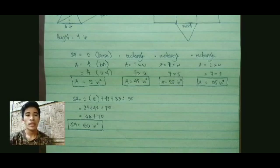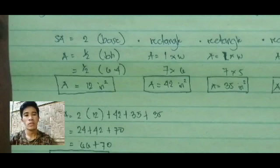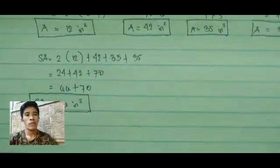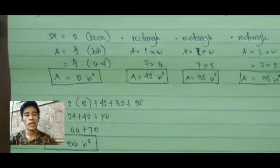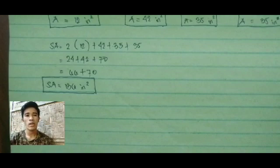Now substituting back into the formula: SA equals 2 times base plus rectangle plus rectangle plus rectangle. The value of 2 times base is 2 times 12 equals 24. Plus the bottom which is 42, plus the right which is 35, plus the left which is 35. So 24 plus 42 equals 66, and 35 plus 35 equals 70. Then 66 plus 70 equals 136 square inches. That is the total surface area of the triangular prism.